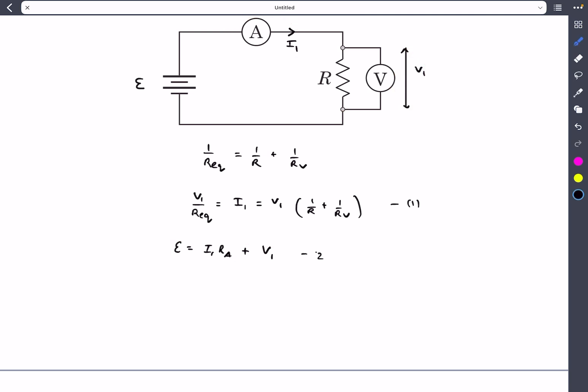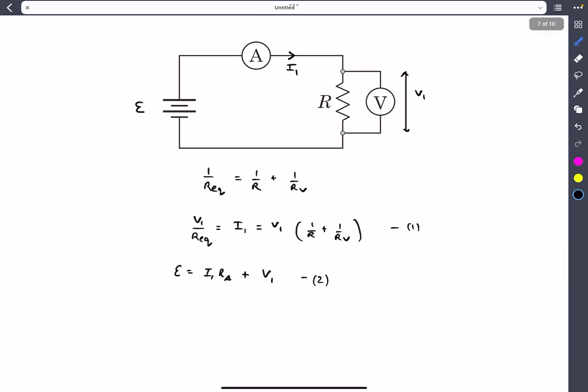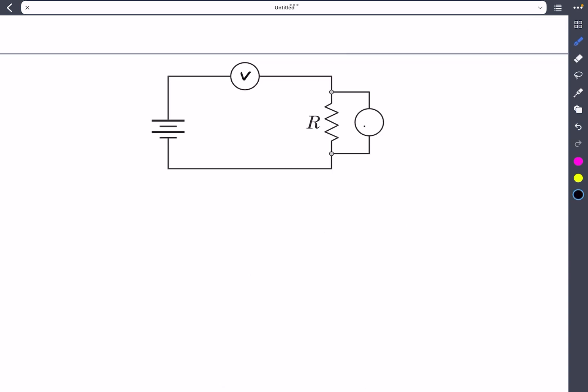Now we switch the position of the voltmeter and the ammeter such that the voltmeter is now present over here and the ammeter is now present over here. In this case the readings are given to be V₂ and I₂ respectively.